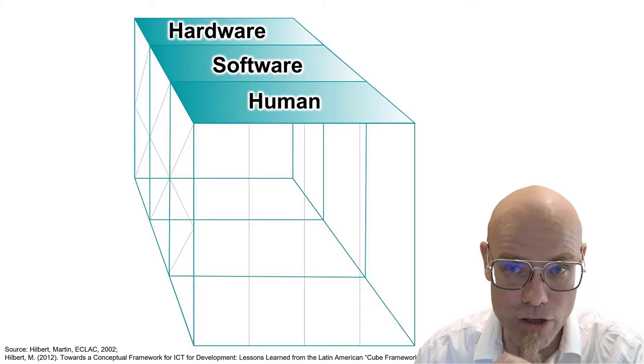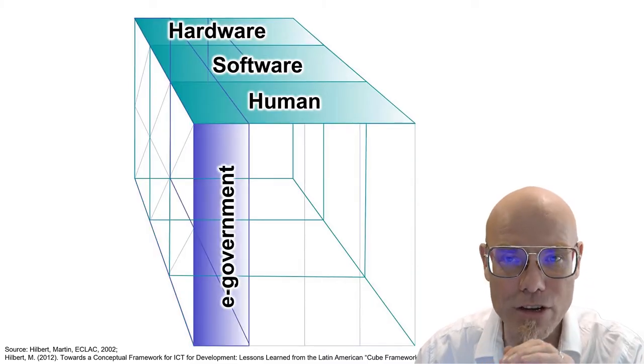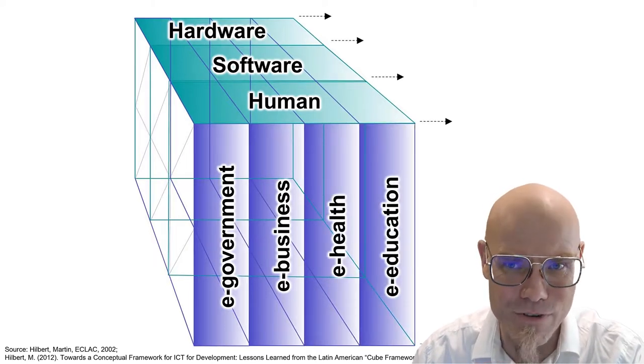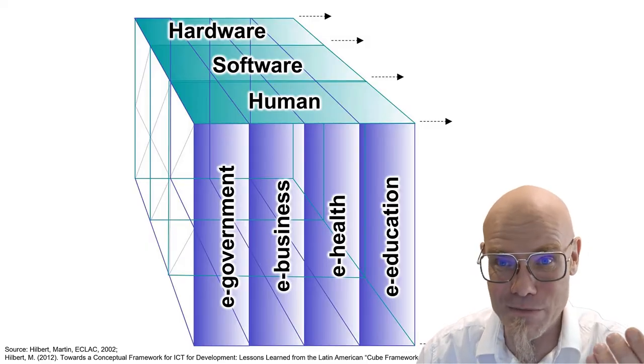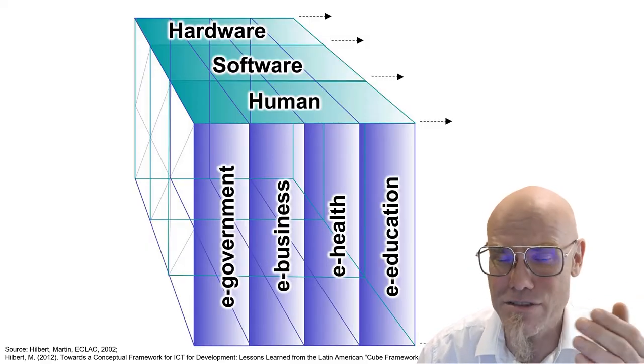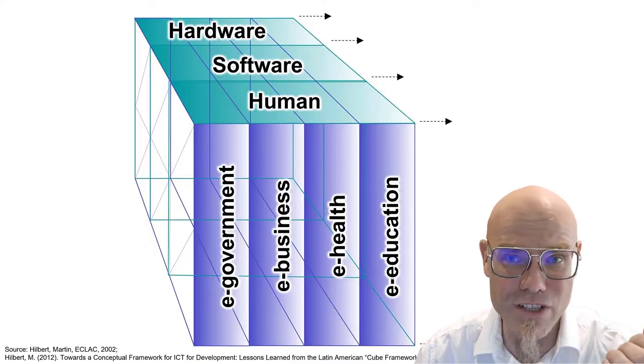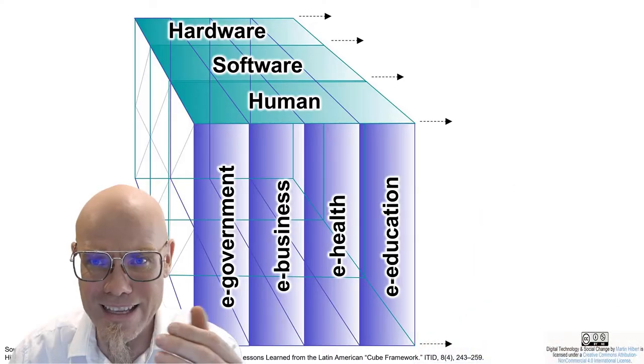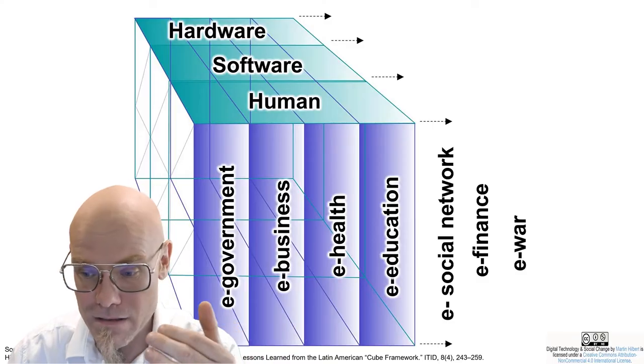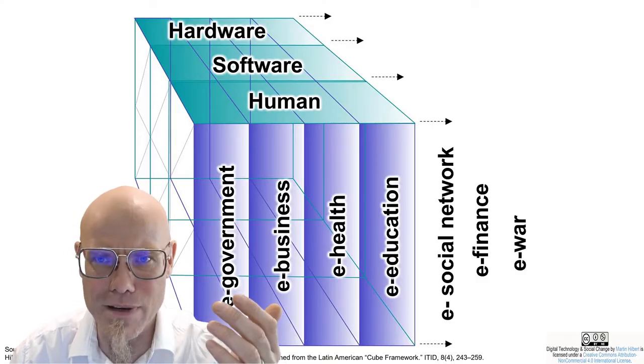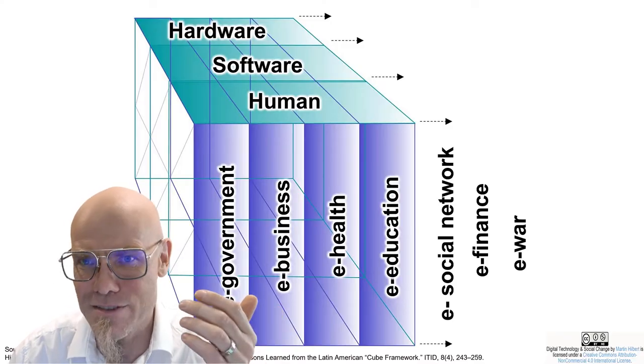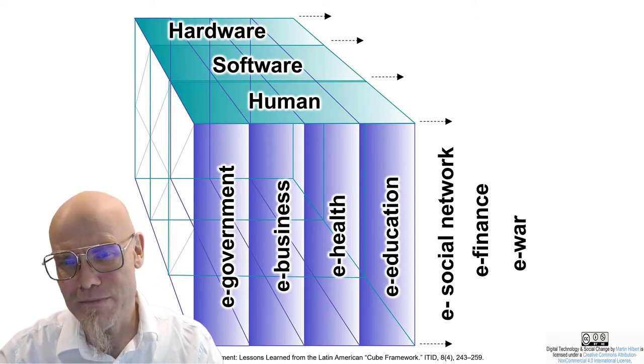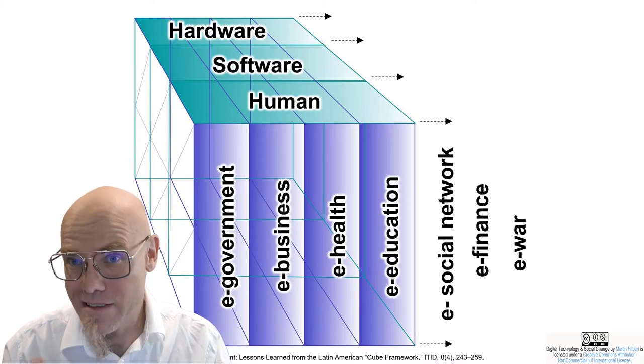What we're doing with digital technology is we put aspects of the information, communication, and knowledge processes of society into electronic networks. That's why traditionally we called it e-government, e-business, e-commerce, e-health, e-education. That 'e' in front basically tells you that part of the information, communication, and knowledge is in an electronic network. And there are many more.